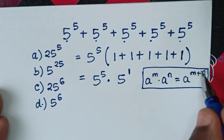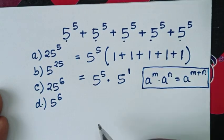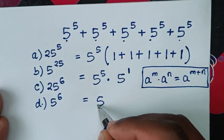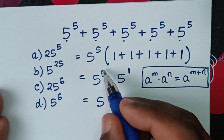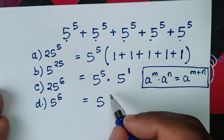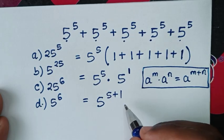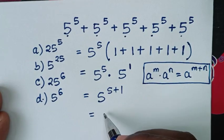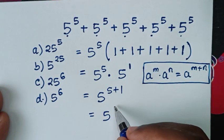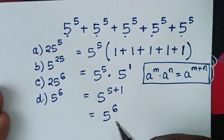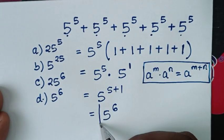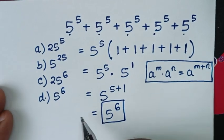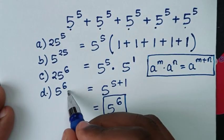Then we will apply this form here. So it will be equal to the same base of 5, then we add 5 plus 1, which is equal to 5 power of 6. So 5 power of 6 is our final answer, which is d.